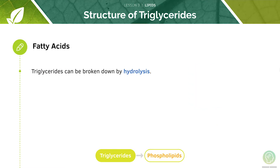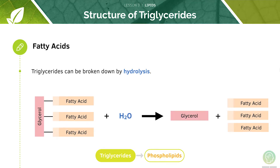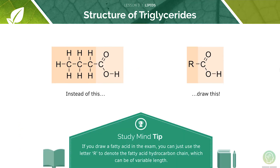A triglyceride can be broken down into one glycerol and three fatty acids by hydrolysis. If you draw a fatty acid in the exam, you can just use the letter R to denote the fatty acid hydrocarbon chain, which can be of variable length.